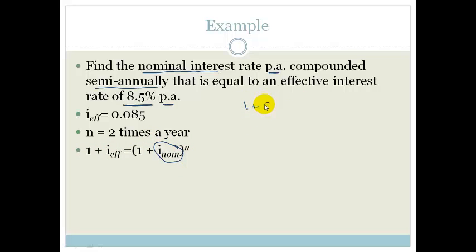So let's fill in our numbers. We've got 1 plus 0.085 equals bracket 1 plus. And now I want you to remember this because this is important. Remember that your nominal interest rate is compounded semi-annually. So your actual interest rate is going to be i nominal divided by 2. Remember that? If we were doing the effective interest rate is equal to 1 plus i nominal over 2. And we're going to square root both sides.